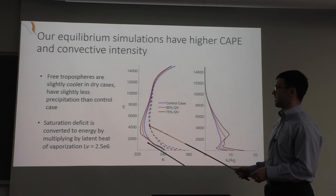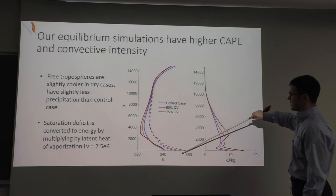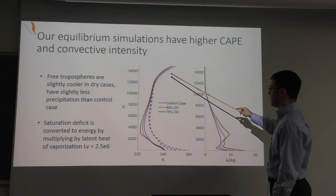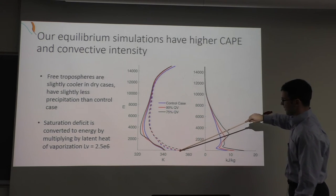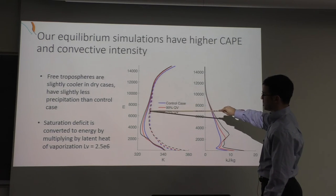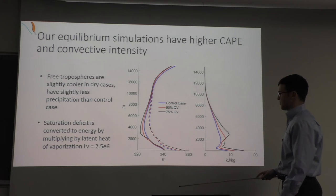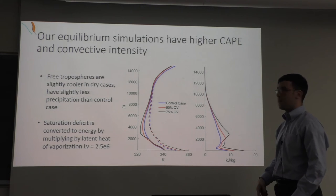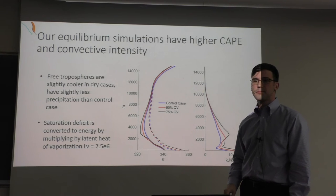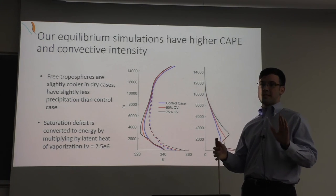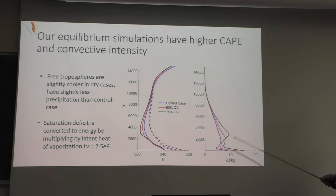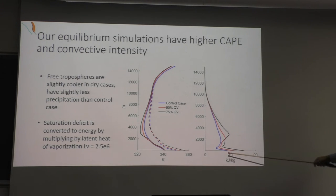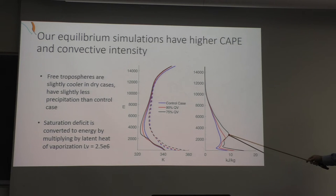Our equilibrium simulations do show higher CAPE and convective intensity as cases get drier. Free tropospheres are slightly cooler in the dry case with slightly less precipitation. The saturation moist static energy — proportional to temperature — and the moist static energy thermodynamic profiles show that in the free troposphere, temperatures are slightly cooler in the driest case and moist static energy is much lower. Mean CAPE is 2,600 J/kg in the control (100%), 2,850 J/kg in the 90% case, and 3,050 J/kg in the 75% case. At the 99.99th percentile of vertical velocity, the driest case has by far the strongest vertical velocities.